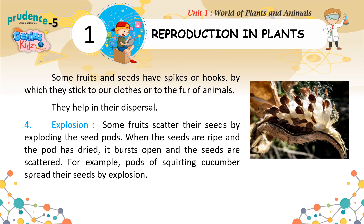Dispersal by explosion: some fruits scatter their seeds by exploding the seed pods. When the seeds are ripe and the pod has dried, it bursts open and the seeds are scattered. For example, pods of squirting cucumbers spread their seeds by explosion.